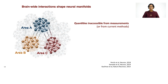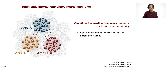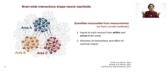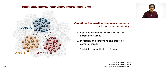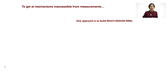The inputs driving this covariance can be not just external inputs, but brain-wide interactions among interacting brain regions. Brain interactions shape these neural manifolds. There are quantities inaccessible from measurements or current methods: what are the inputs to each neuron from within and across brain areas? What is the direction of these interactions and the effect of common inputs — are area A and B affecting area C unidirectionally, or does area C project to area A and B reciprocally? To get at these mechanisms impossible to get at from measurements alone, one approach is to build multi-region RNN models constrained directly by neural and behavioral data.